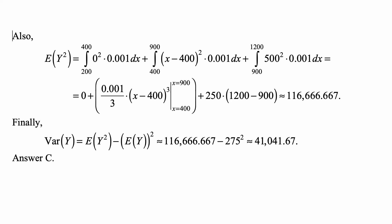The third one is still a constant, 500 squared times 0.001, that equals 250, times the length of the interval, which is 1200 minus 900. This is approximately 116,666.666, so roughly 116,666.667.